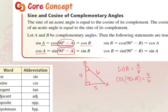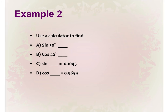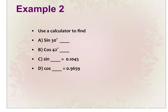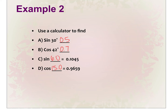The cosine of A is the sine of 90 minus A. They have a relationship of being complements of each other. Let's get some practice with our calculators finding trig values. We got 0.5, 0.7, 6.0, and 15.0. We round to the nearest tenth unless it specifies otherwise.